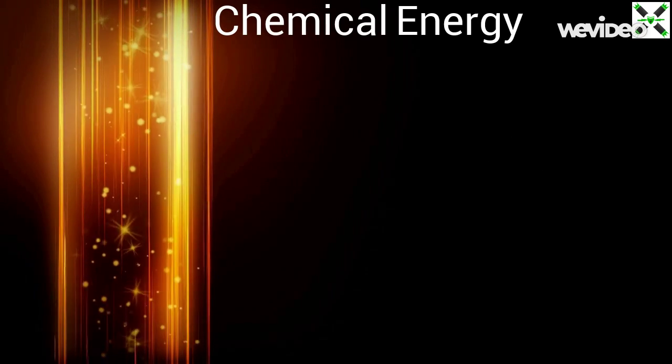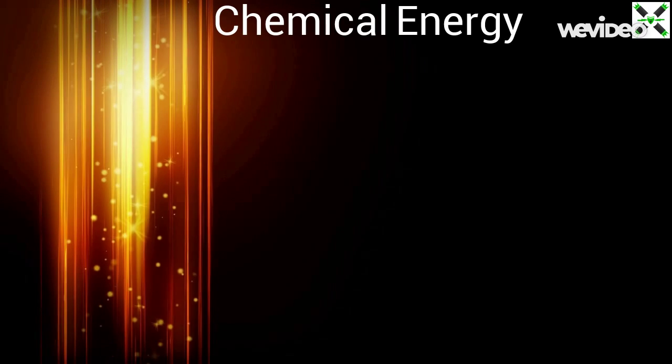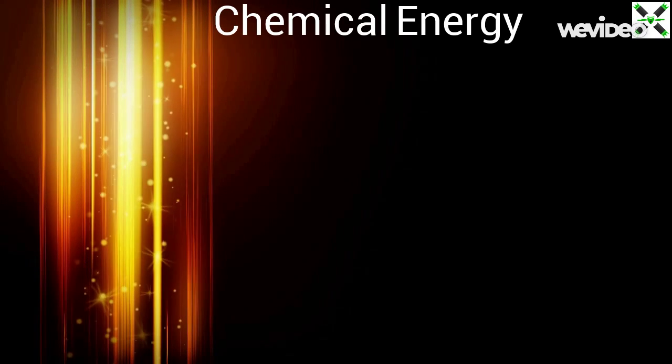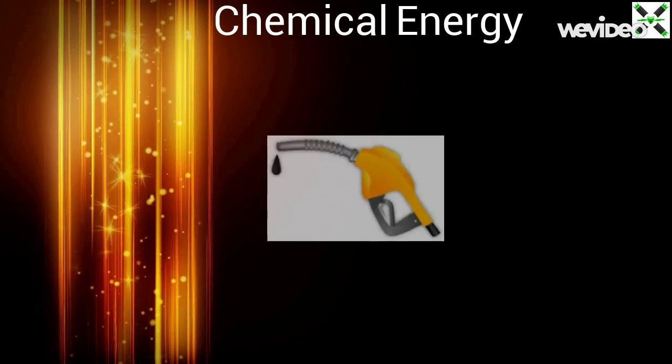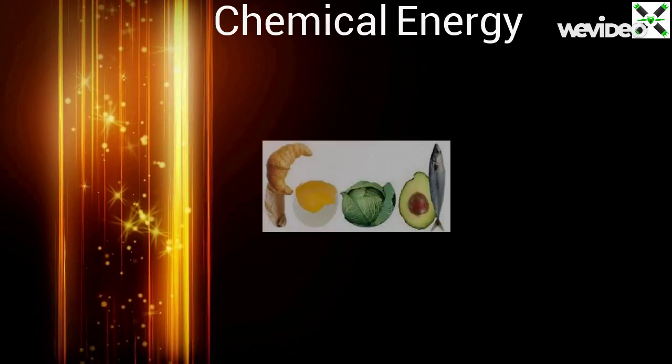The first of the main six types of energy is chemical energy. It is the energy that is found in the bonds of molecules to compounds. Some examples of chemical energy include car gasoline, natural gas, food, or coal.